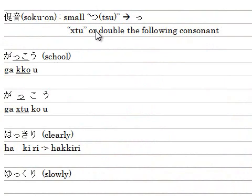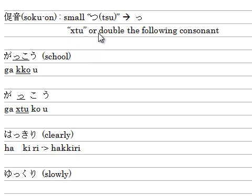The sound of つ — you need to type T-S-U. But for the small っ, you need to type X-T-U, or just double the following consonant.